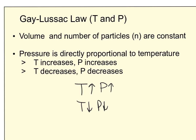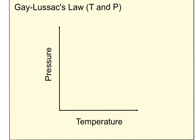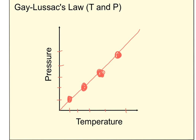Same with the opposite: temperature goes down, pressure goes down. Because this is a direct relationship, the graph is straightforward — as temperature rises, pressure also rises, giving us a nice straight line. Direct relationship: as one goes up, so does the other.